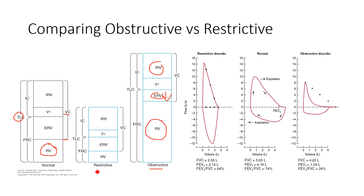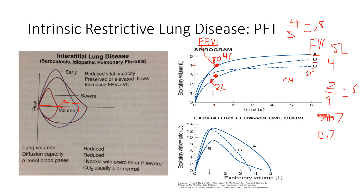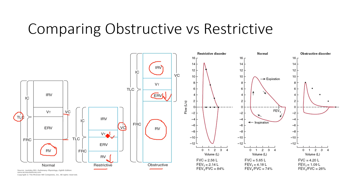In a patient with a restrictive defect, everything is reduced — residual volume, tidal volumes, and we probably even see a little reduction in vital capacity as well, but everything is reduced proportionally. FEV1 is reduced, but so is FVC, because the lungs are just smaller. Both FEV1 and FVC are decreased in a restrictive defect, whereas in an obstructive defect, it's primarily FEV1.